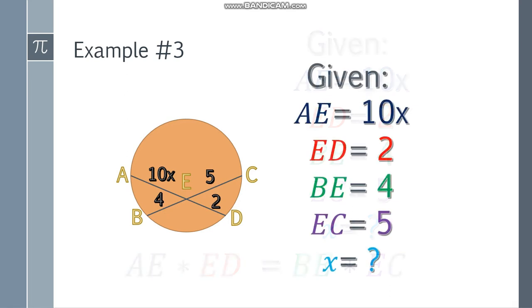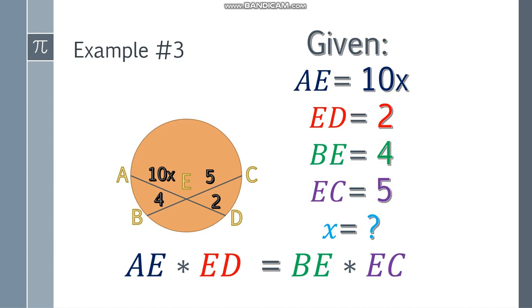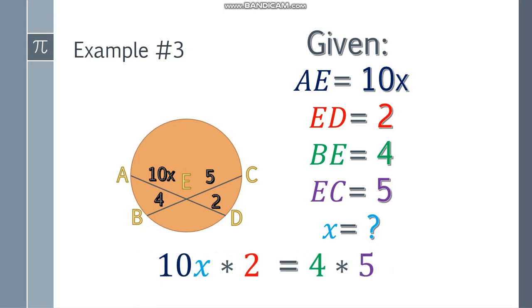Write the formula: AE times ED, so this segment multiply by this, is equal to the product of BE and EC. Let's substitute the values. So we have here 10X, 10X multiply by ED, and equal to BE product, 4 times 5, that will be 20.